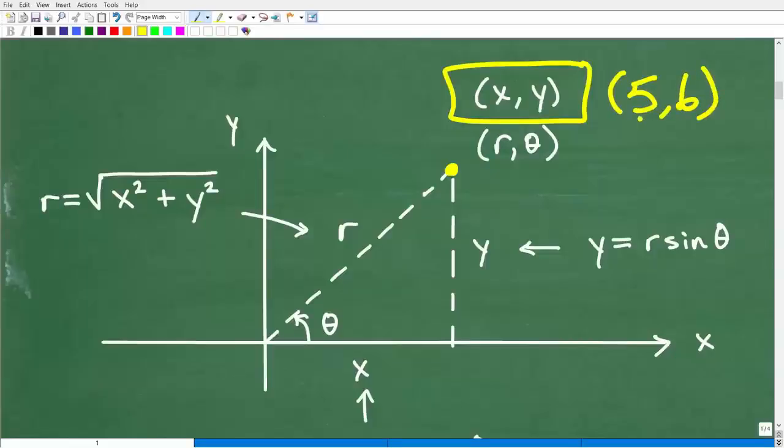XY ordered pair. So when we have equations where we are talking about rectangular, we're talking about equations that describe points using this system of location, the regular xy system, the xy ordered pair system that you're already used to.